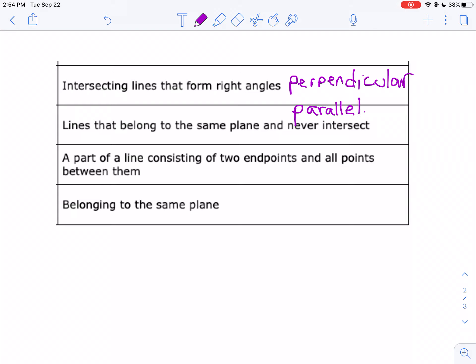A part of a line consisting of two endpoints and all the points between them, that would be a line segment. You had this one right. Belonging to the same plane, that's coplanar.